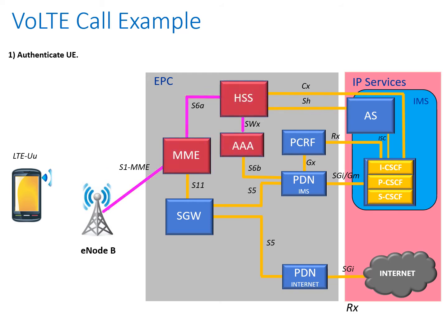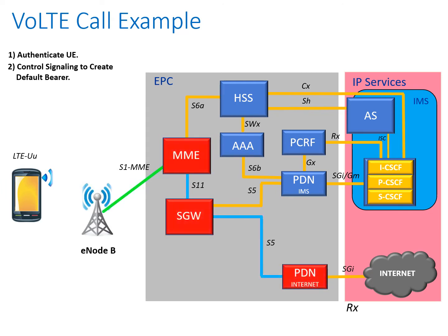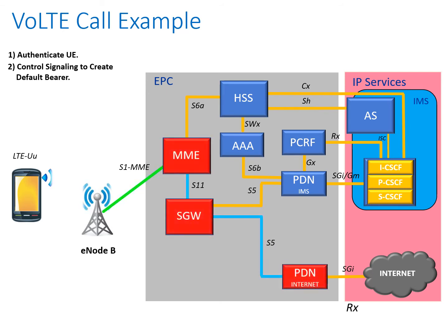Once we've authenticated the device, we can now set up the control signaling to create a default bearer on into the internet. The MME selects the appropriate Serving Gateway (SGW) to access the eNodeB, which in turn connects via the Packet Data Network Gateway into the internet. In this example I'm showing two PDN gateways, but in reality quite often one PDN gateway is used for connection into both the internet and the IMS core.